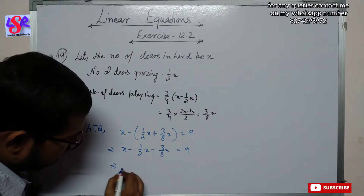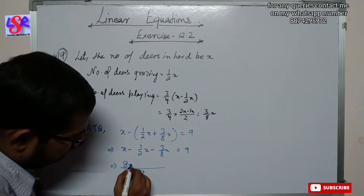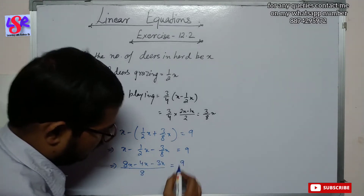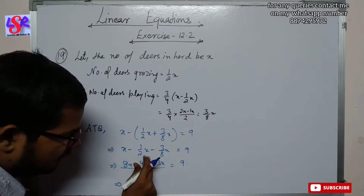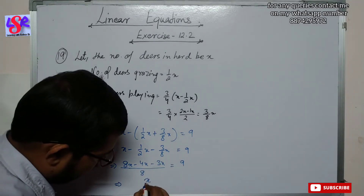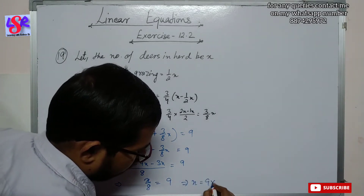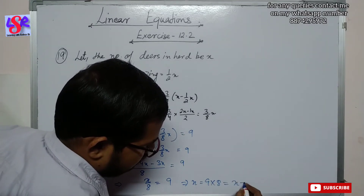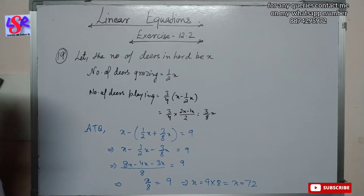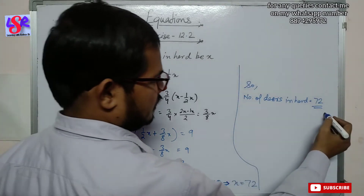Taking the LCM of 8: 8x − 4x − 3x = 9 × 8, giving (8 − 4 − 3)x = 72, so x = 72. Therefore, there are 72 deer in the herd.